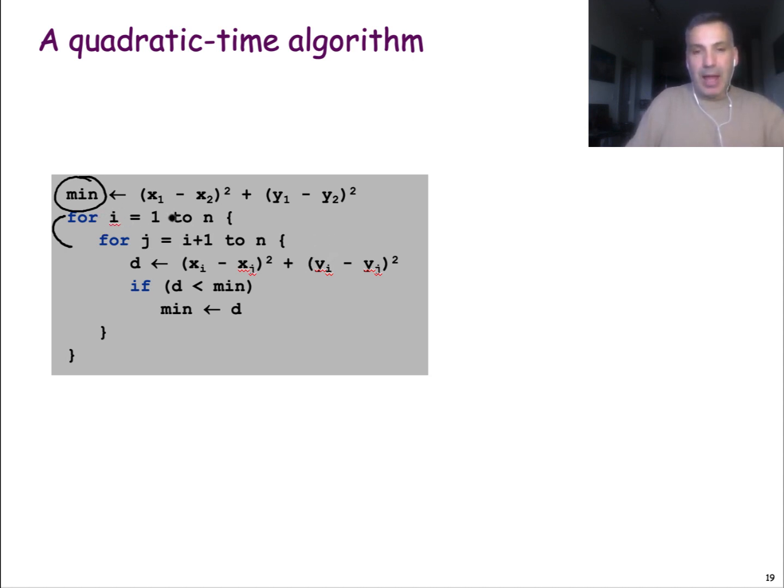The variable i goes from 1 to n while the variable j goes from i plus 1 to n. Why do we do that? So that we consider every pair of points once. We don't want to consider for example the point p1, p4, and then again p4, p1. So we calculate the distance between the points i and j, which is the square of the distance. And if that distance is less than the minimum we have seen so far, we update the variable min.